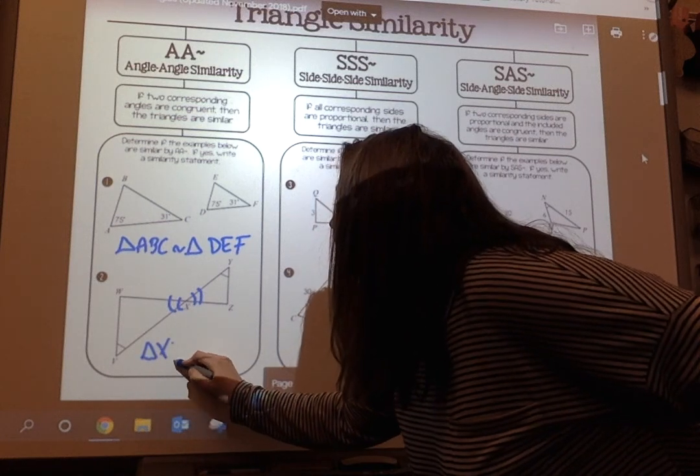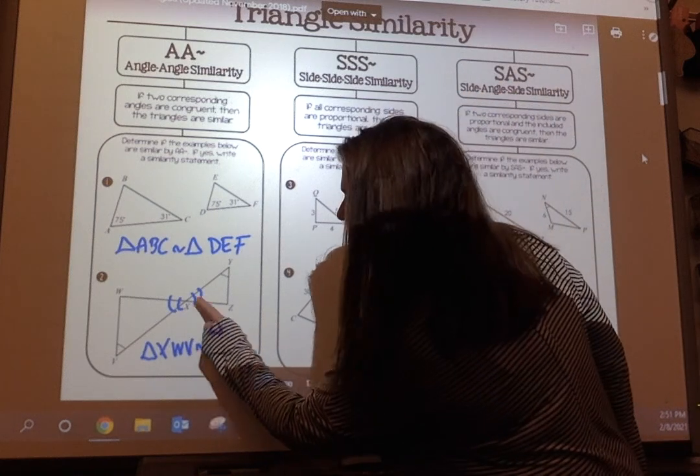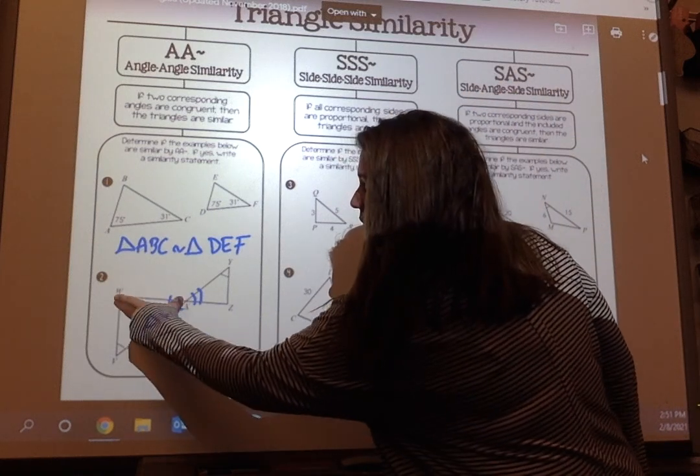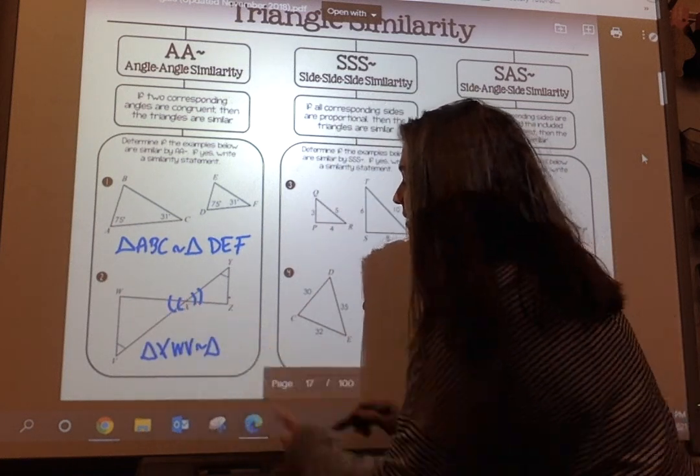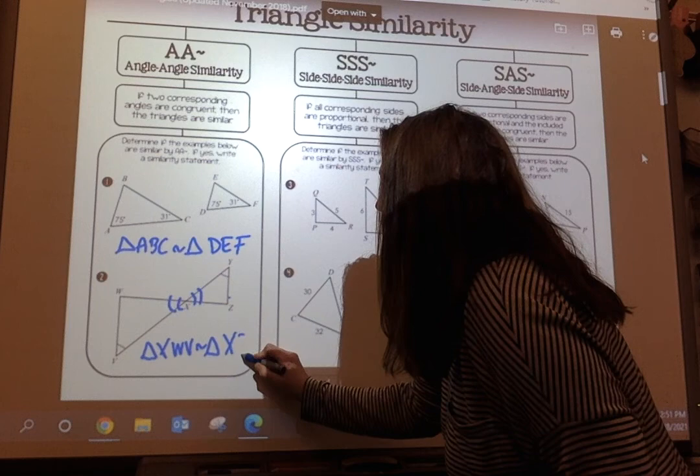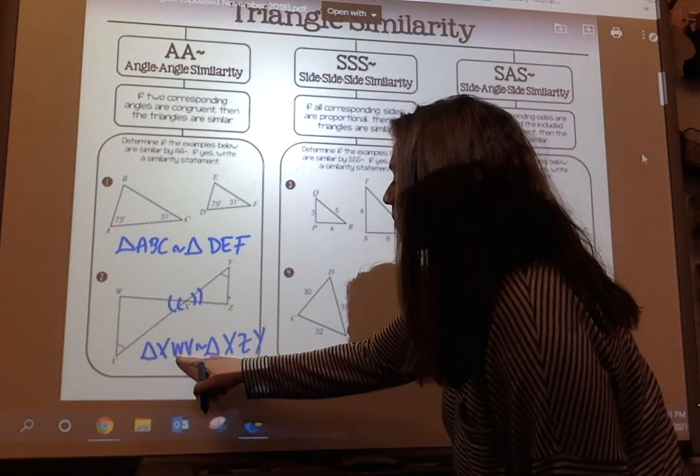So watch my similarity statement. If I say triangle XWV is congruent to triangle—now I went from X to W, so there's no two tick marks to no tick marks. So I'm going to go from X to Z, two tick marks to no tick marks, and then Z to Y. So Z to Y, because W, V went from no tick marks to one.